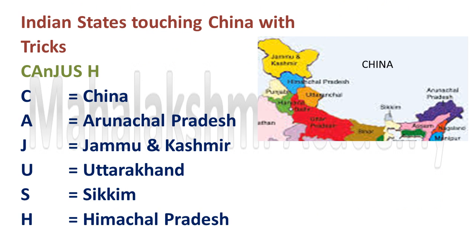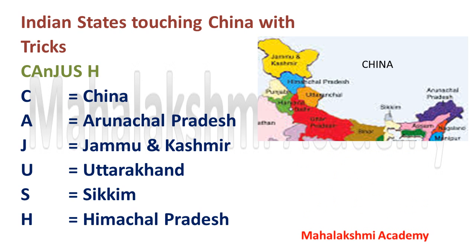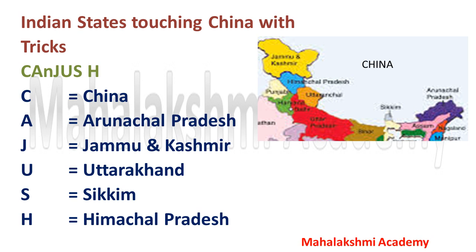Next is China — one of the largest countries in the world. The trick to learn the states touching China is 'Kanjus Hai.' C stands for China, A stands for Arunachal Pradesh, J stands for Jammu and Kashmir, U stands for Uttarakhand, S stands for Sikkim, and H stands for Himachal Pradesh. These are the states sharing boundaries with China.